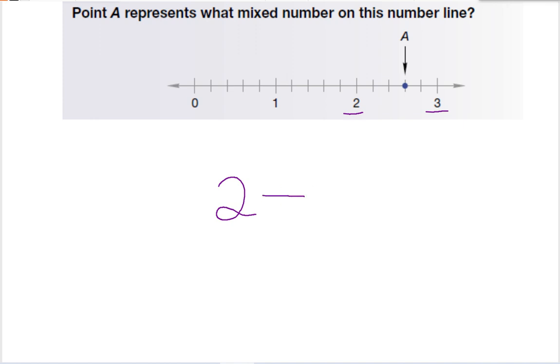To figure out the fraction, I need to count how many tick marks there are between 2 and 3. So, if we look, we have 1, 2, 3, 4, 5. That means this fraction is broken up into fifths. The A is pointing at the third line. So, this is going to be 2 and 3 fifths.